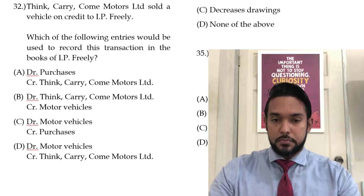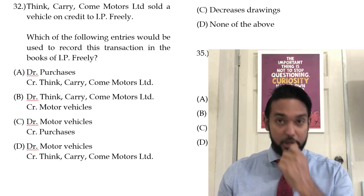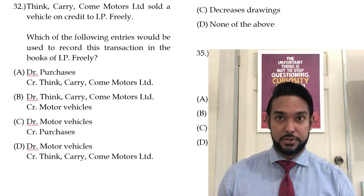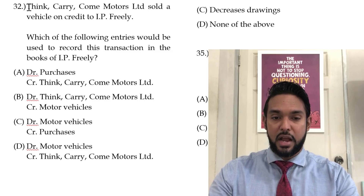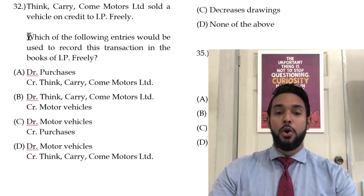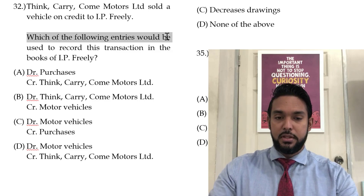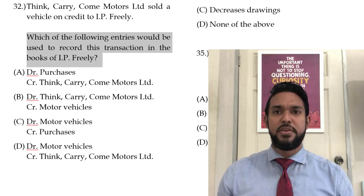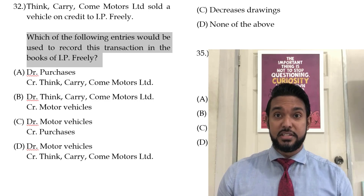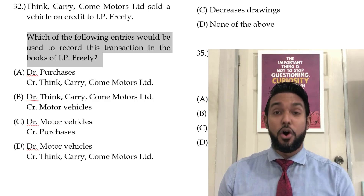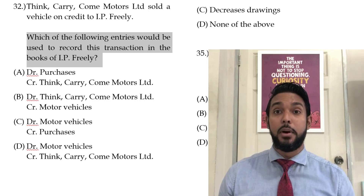Question 32: Think Carry Come Motors Limited. Notice, by the way, some of these names may seem slightly familiar if you've been going through past papers. So Think Carry Come Motors Limited sold a vehicle on credit to IP Freely. Which of the following entries would be used to record this transaction in the books of IP Freely? So in the books of IP Freely — what is IP Freely doing? IP Freely is buying a motor vehicle on credit from Think Carry Come Motors Limited.